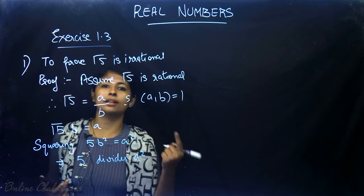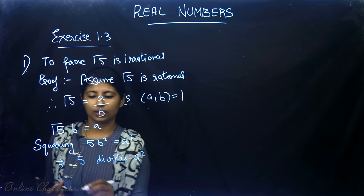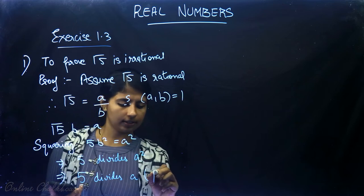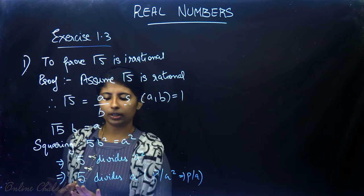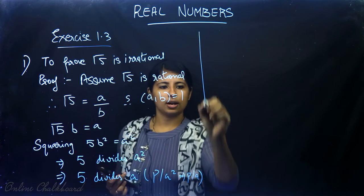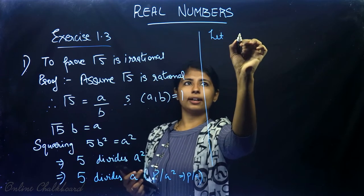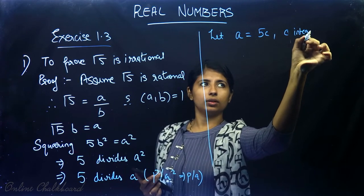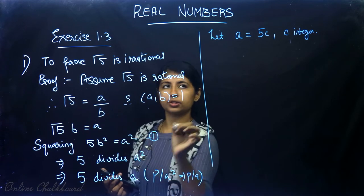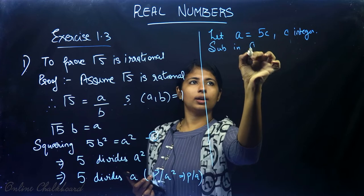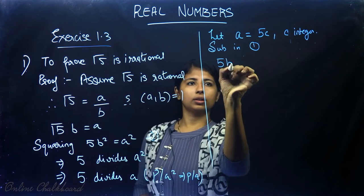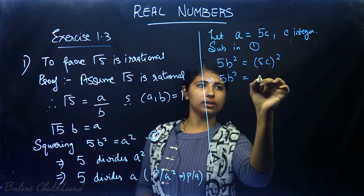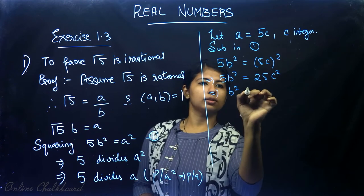From a² = 5b², this implies 5 divides a². By theorem 1.3, if any prime number p divides a² it will also divide a, so 5 divides a. Therefore we can let a = 5c for some integer c. Substituting back: 5b² = (5c)² = 25c², which gives b² = 5c².